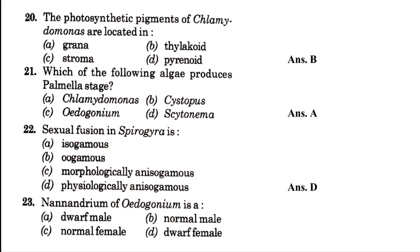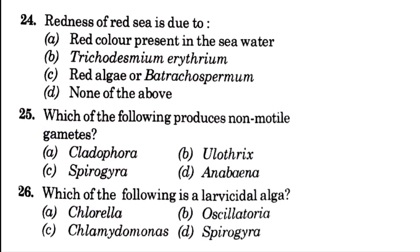To explain: isogamous, oogamous, and anisogamous — these depend on the size of the gametes. If gametes are of similar size, it is isogamous; if unequal in size, it is anisogamous; if unequal with a motile male and non-motile female, it is oogamous. The nanandrium of Oedogonium — options are dwarf male, normal male, normal female, and dwarf female — the answer is option A, dwarf male.